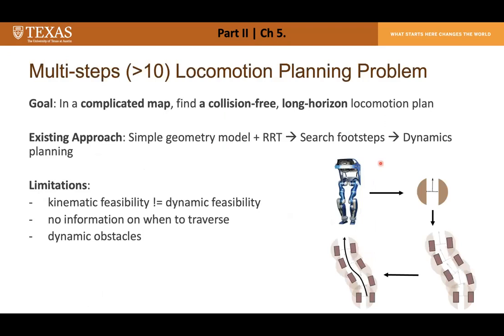Chapter 5 addresses the multi-step locomotion planning problem, requiring a long-horizon, collision-free locomotion plan — normally more than 10 steps — in a maze-like environment. Existing approaches first solve a footstep sequence using a simple geometric model and sampling-based search, then consider dynamic motion over the predefined footstep sequence. This is limited because kinematic feasibility does not always guarantee dynamic feasibility, and there is no notion of when to traverse footsteps, making collision checking with dynamic obstacles difficult.